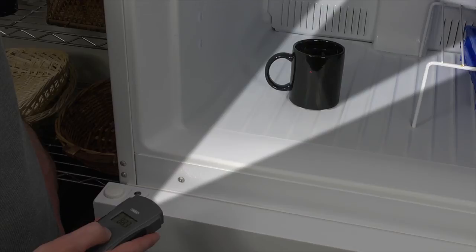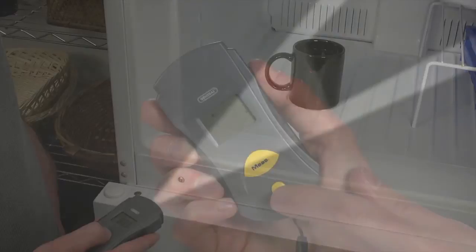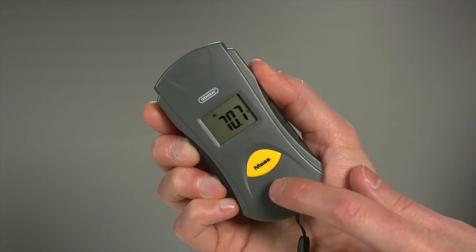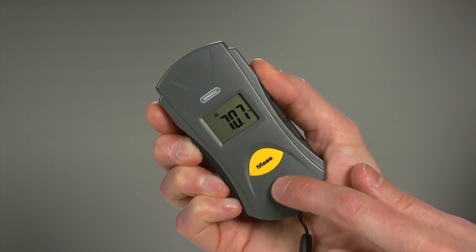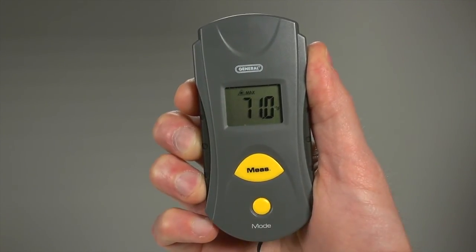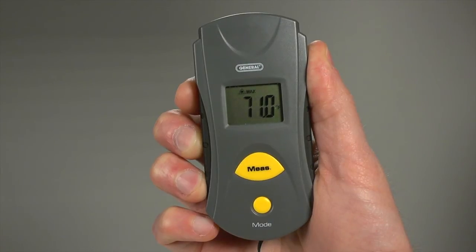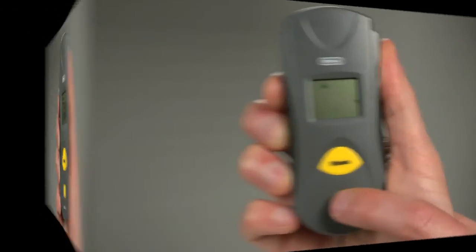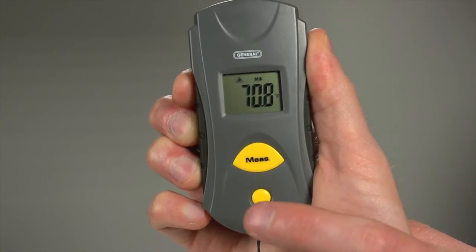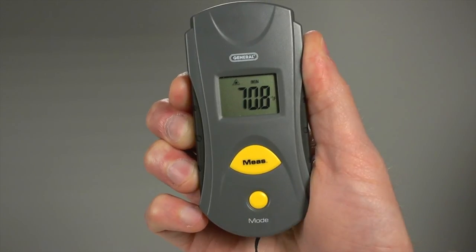Make sure to keep the measurement area within the target. There's more you can do. The mode button provides five advanced functions. Press once to enter max mode. Display maximum temperature recorded during one session as shown. Press mode twice for min to display minimum temperature recorded during a session.